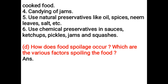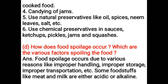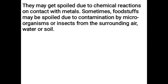How does food spoilage occur and what are the various factors that spoil food? Food spoilage occurs due to various reasons like improper handling, improper storage, and transportation. Some foodstuffs like meat and milk are either acidic or alkaline and may get spoiled due to chemical reactions on contact with metals.